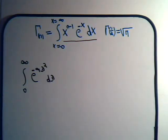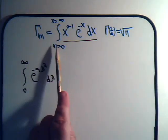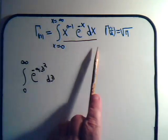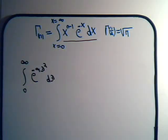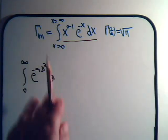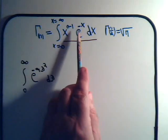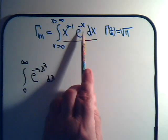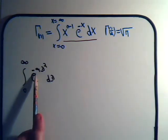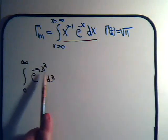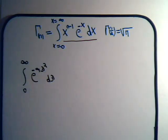This might seem a far cry from our bona fide gamma integral, but what happens if we make a substitution? Because if it's going to be in the form of a gamma integral, we have to have e to the minus a variable to the first power, not the variable squared or cubed. So our first hint would be: let's take this and just set it equal to x.